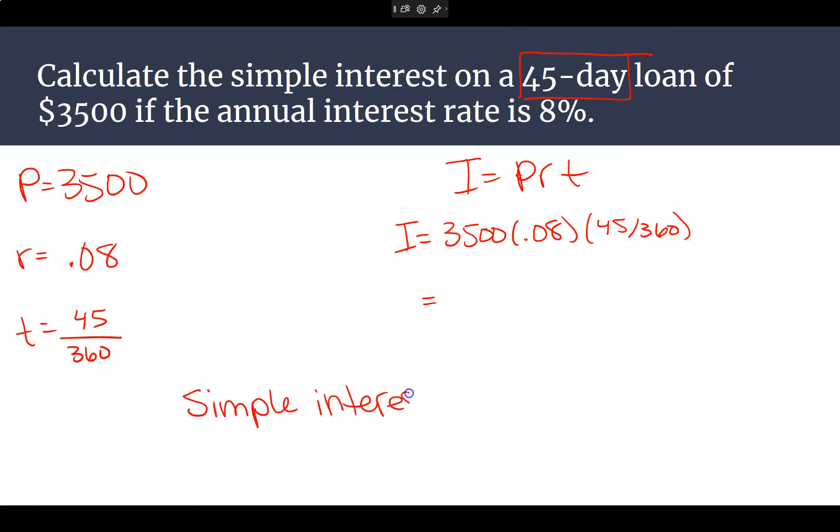Remember, parentheses matter. What do we get? An even $35? Yes. Good. So in 45 days, this loan is earning an extra $35. That's essentially what they're charging you to borrow their money. Questions for me on this one?